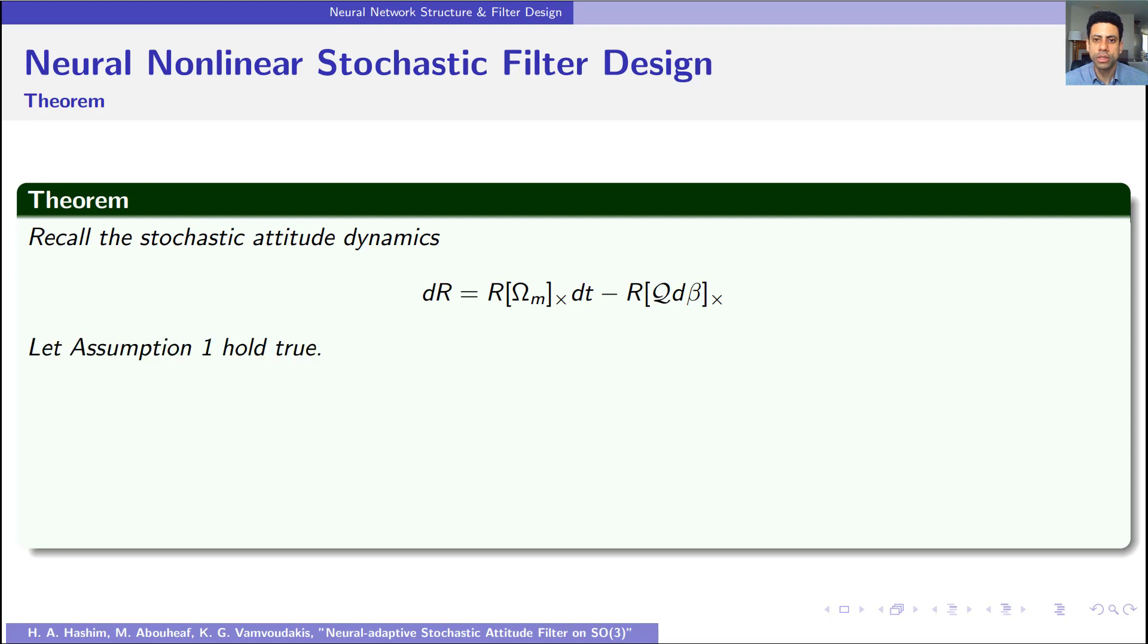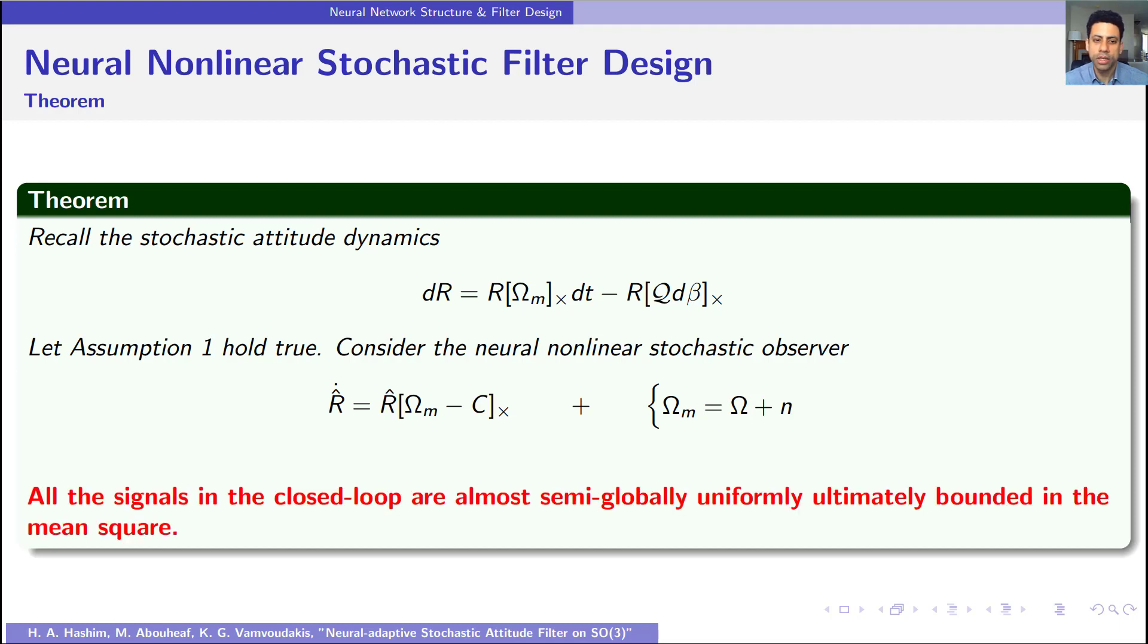Let assumption one hold true and consider the neural nonlinear stochastic observer R hat dot equal R hat multiplied by skew symmetric of omega minus C, where omega M is equal to the true angular velocity plus noise. This way we can conclude that all the signals in the closed loop are almost semi-globally uniformly ultimately bounded in the mean square.